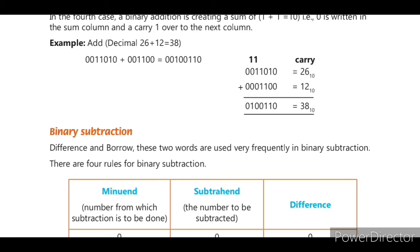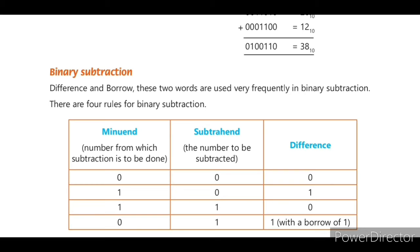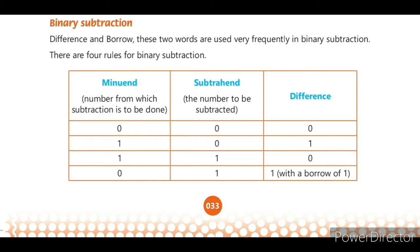Next we will see binary subtraction. The terms 'difference' and 'borrow' are frequently used. There are four rules. In the table: Minuend is the number from which subtraction is done, and Subtrahend is the number to be subtracted.